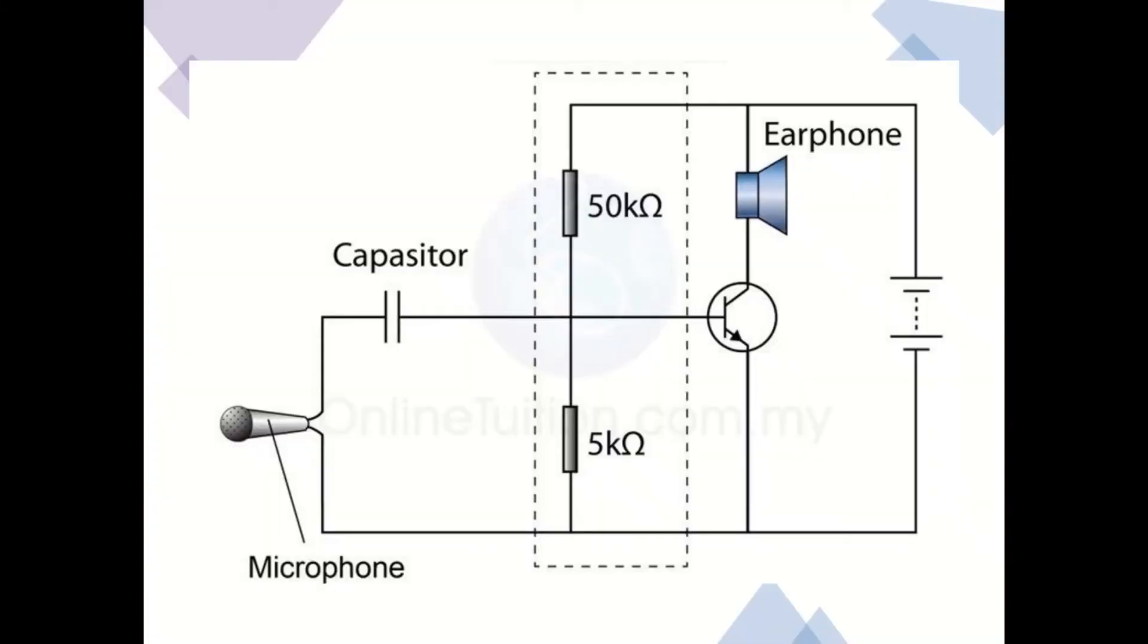Next, I will explain in detail about this diagram. At the left side is base current while the right side is collector current. The base current must be forward bias while the collector current must be reverse bias.